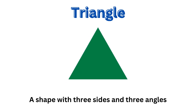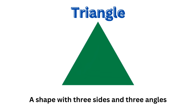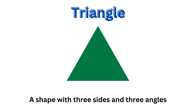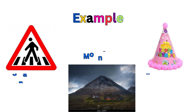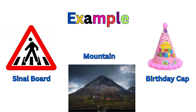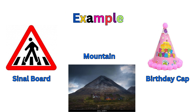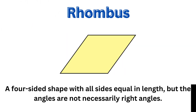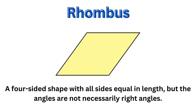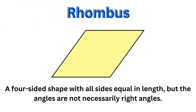The next shape is a triangle — a shape with three sides and three angles. The examples are a signal board, a mountain, and a birthday cap.